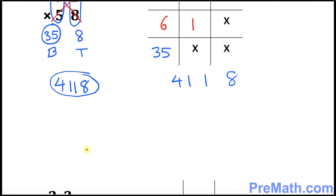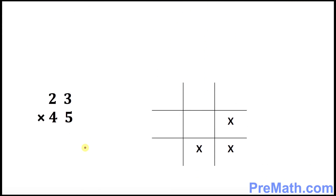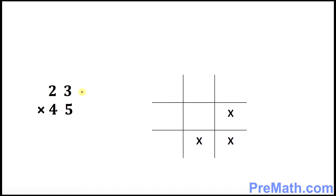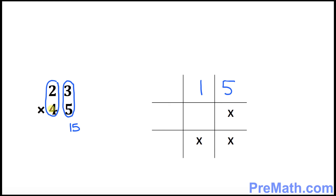Let's move on to the next example. Once again, take care of the right-hand side digits: 3 times 5 is 15, so 5 is going to be right up here and 1 is going to be right here. Now let's take care of the left-hand side digits: 2 times 4 is 8, and this 8 is going to show up at the bottom row.